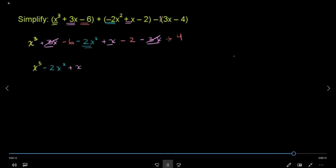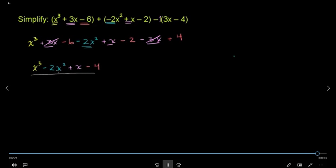x is minus 6, minus 2 and minus 4. For minus 8, minus 1 plus 4 is minus 4. That means the number of times is equal to 72 rupees.